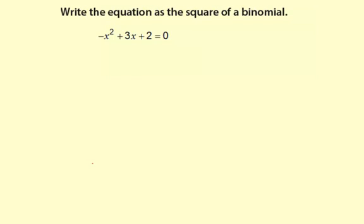Write the equation as the square of a binomial. So here we have negative x squared plus 3x plus 2 equals 0.